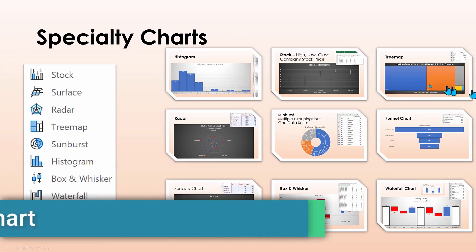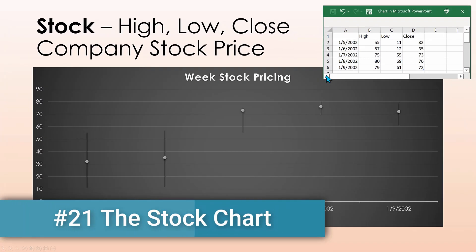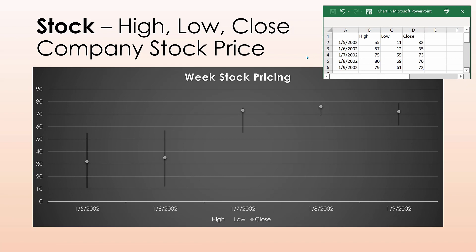The stock chart is a specific chart for a specific situation — during a specific trading period, typically done in days but it could be weeks or months. There are three data sets: the highest price reached during that period, the lowest, and then the ending price at the end of the period. It works for stock pricing, cryptocurrencies, or other financial instruments, but it must use these three data series.